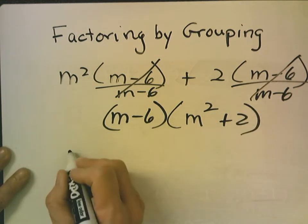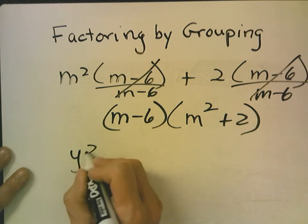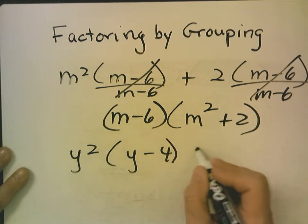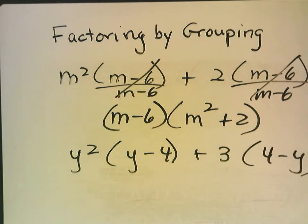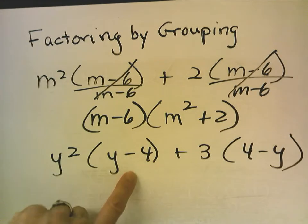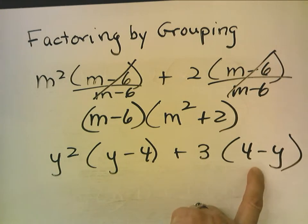Now, let's try one more. y squared times y minus 4 plus 3 times 4 minus y. Now, looking at this, I'm like, well, it kind of looks like y minus 4 is the common factor. But this is actually 4 minus y.